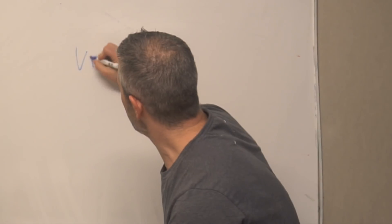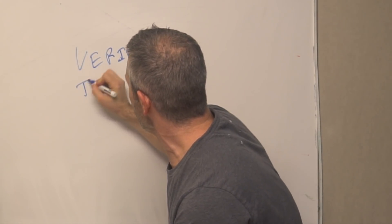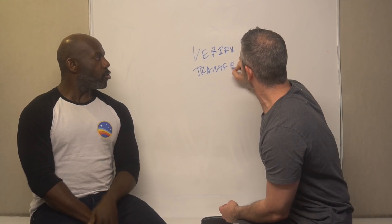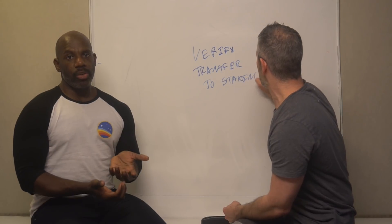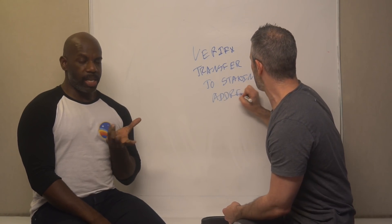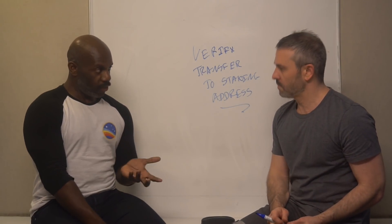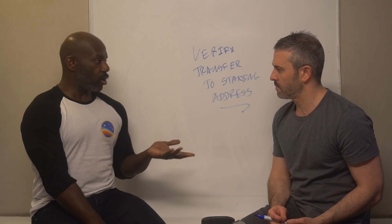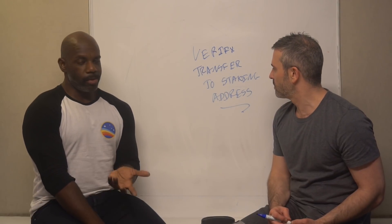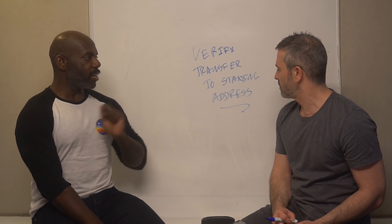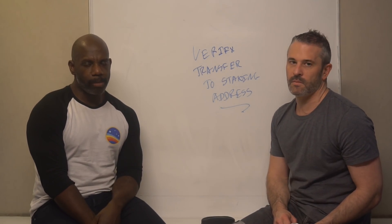The next step is verifying the transfer to the staking address. In order to complete transactions on the OpenST utility blockchain, the account needs to have staked for rent tokens as well as gas. To do that, you need to have OST — or in this case OST alpha — on the value chain. We are giving OST alpha to dashboard users, and here we verify that that OST alpha has been transferred and that the transaction has been committed to the chain.